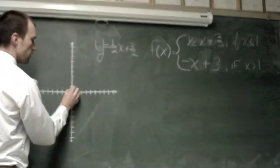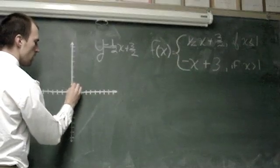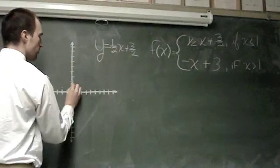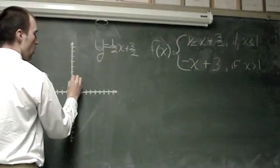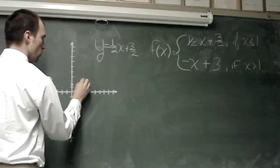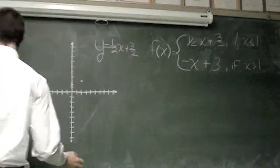And so, quick graphing of this starts me off at a positive three-halves, right here. And I have a slope of one-half, which means for every one I go vertically, I go one-two horizontally. Up one over two,